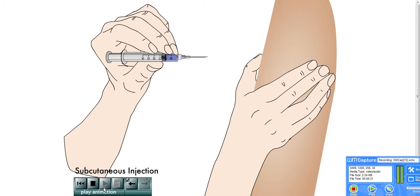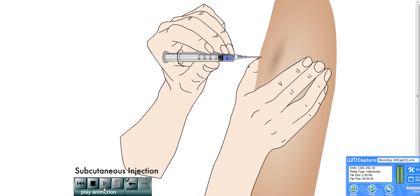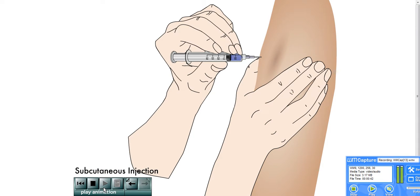In subcutaneous injections, the needle may be inserted into the subcutaneous tissue at 45 or 90 degree angles. The skin may be spread or pinched before inserting the needle and the angle adjusted to the degree of adiposity of the person being injected.